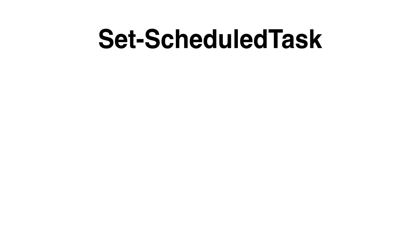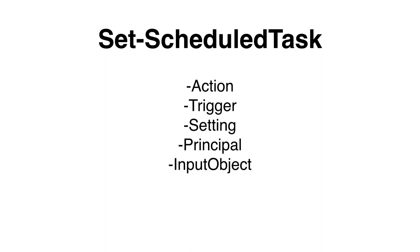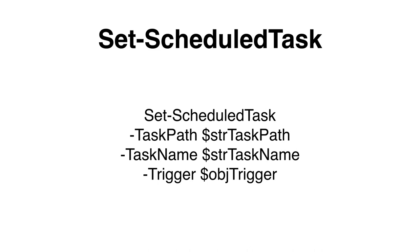If we need to make changes to a registered task, we can use the Set-ScheduledTask cmdlet. Parameters that can be set include action, trigger, settings, and principal. We can use the InputObject parameter if we have created an object variable of a task, for example by using Get-ScheduledTask. We can also change the user and password used to run the task. Here is an example of how to change a trigger on a registered task.